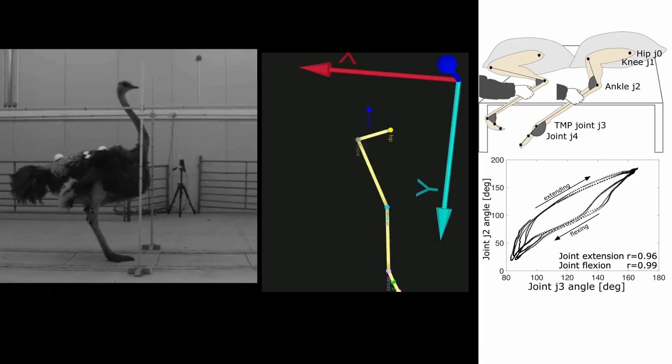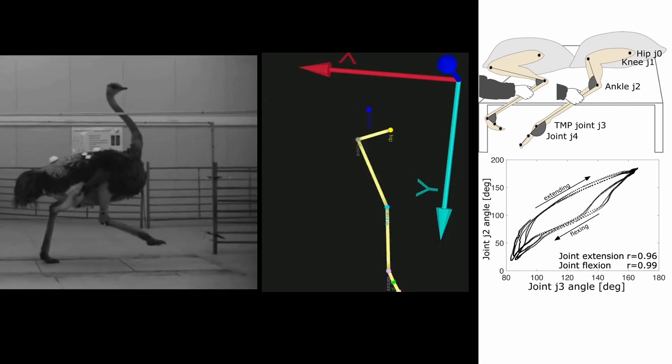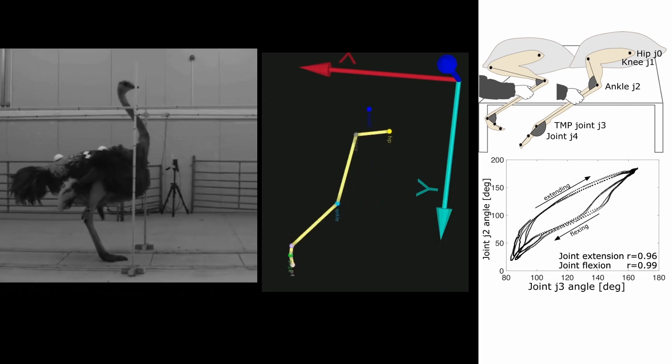Birds move their leg joints unlike humans. Their toe digits are flexed backwards during leg swing. We observed that the ankle and the tarsometatarsophalangeal joint are mechanically coupled.